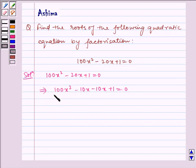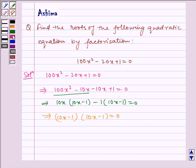Now taking 10x common from the first two terms we get 10x(10x - 1). Taking -1 common from the last two terms we get -1(10x - 1) = 0, which implies (10x - 1)(10x - 1) = 0.